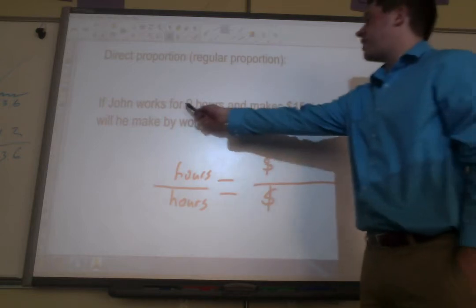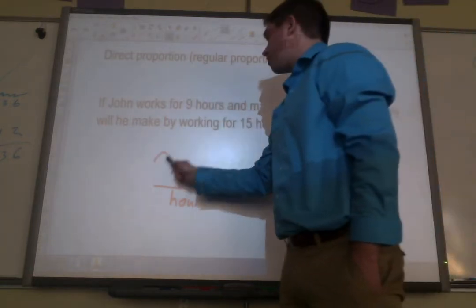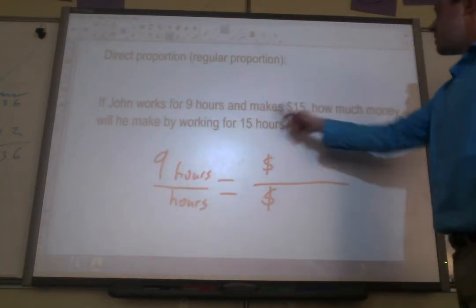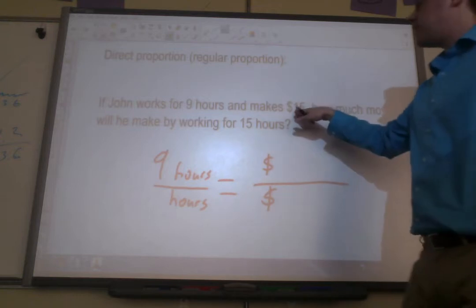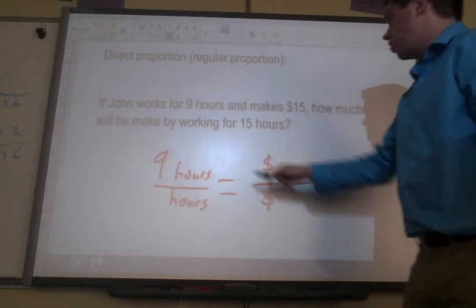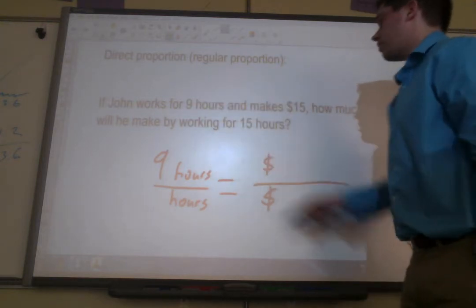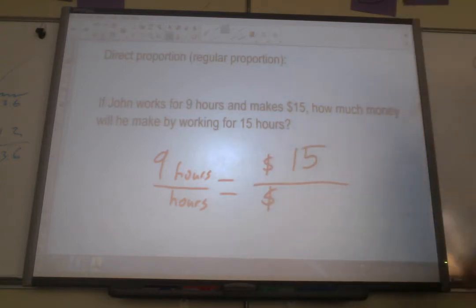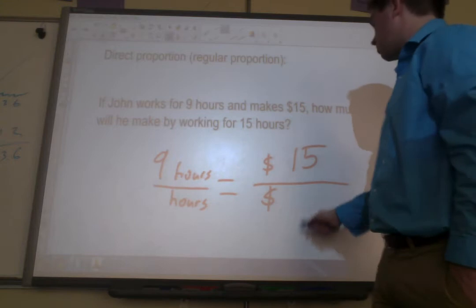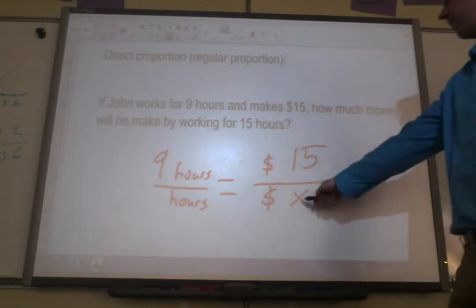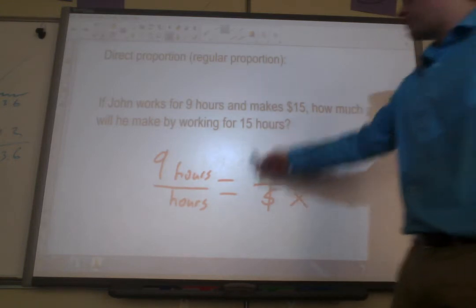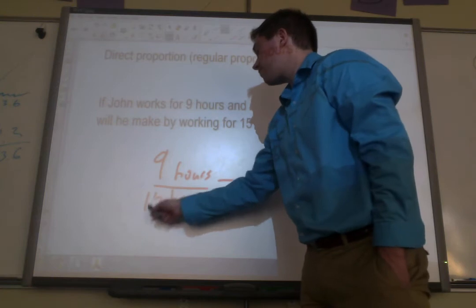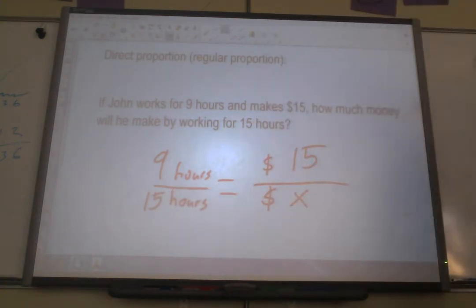Okay, so it says first he works for 9 hours, so we'll go ahead and put that here, and he makes $15. Now since the $15 goes with the 9 hours, we've got to put those two across from each other. So there's 9 hours, here's our $15. Okay, how much money will he make, so we don't know how much money he's going to make, there's our variable, by working for 15 hours. And here we go, we've set up our proportion.